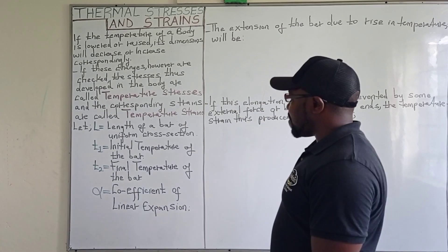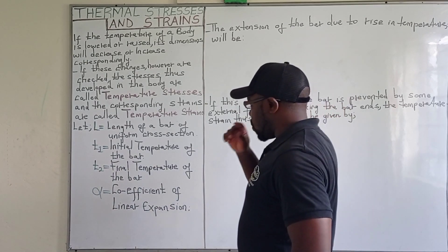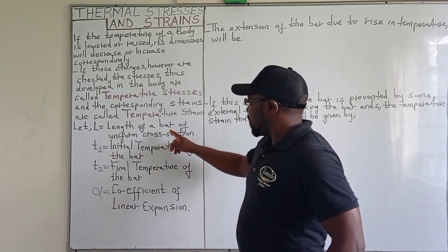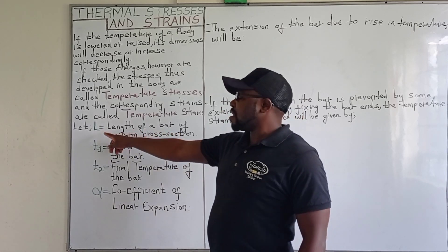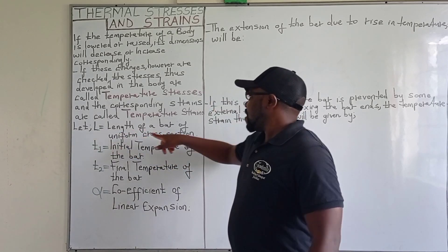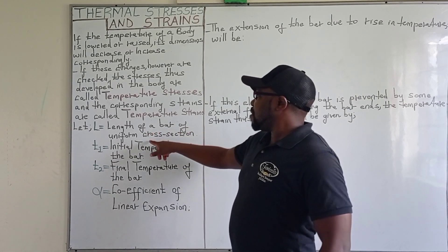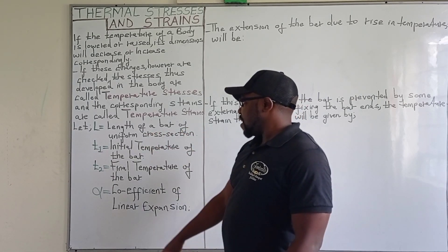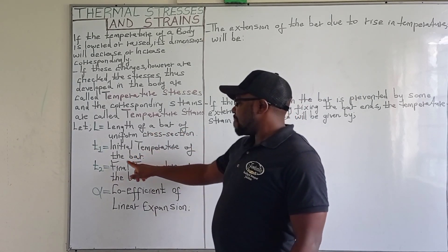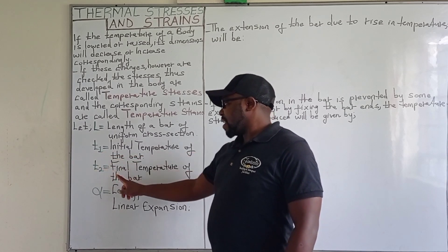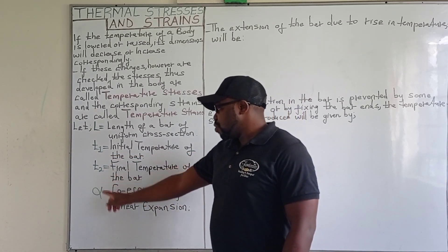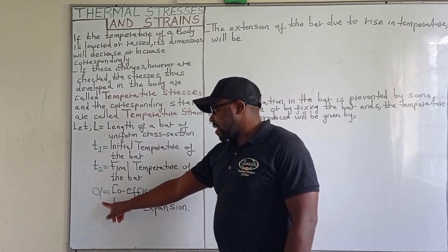Now, if we have a body with a length L — that is, a bar of uniform cross-section — with the initial temperature of the bar being T1 and the final temperature of the bar being T2.